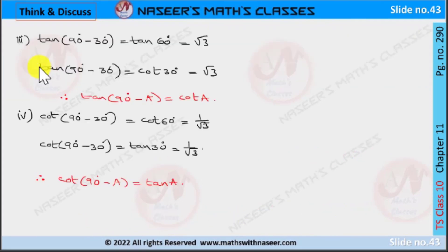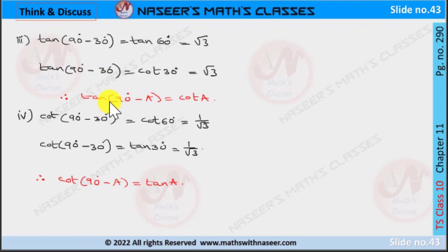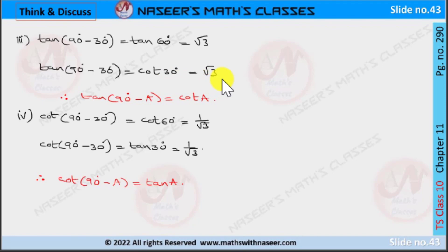For the third relation, tan(90° - a) = cot(a): tan(60°) = √3. By complementary angles, we can write tan(90° - a) = cot(a), then tan(90° - 30°) is written as cot(30°). We already know cot(30°) = √3.